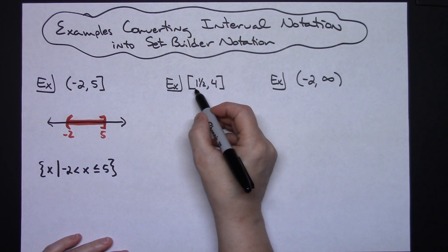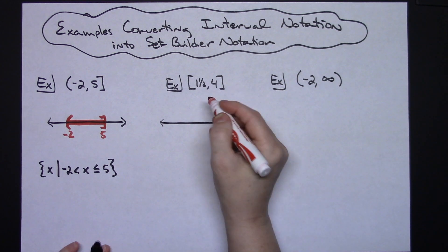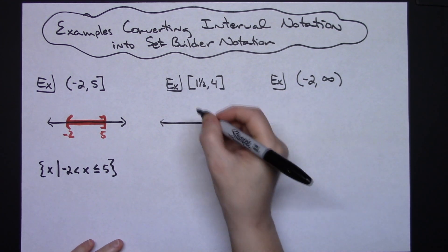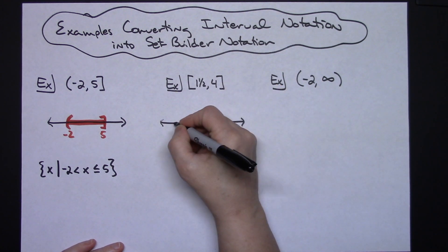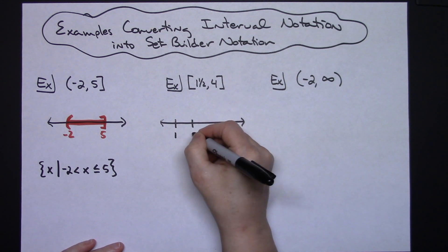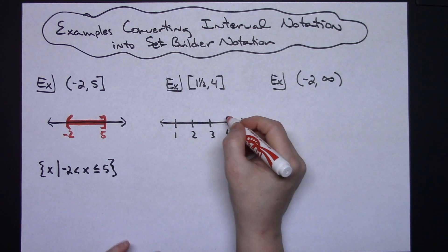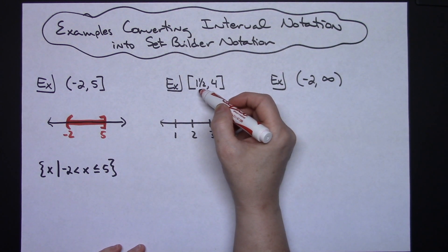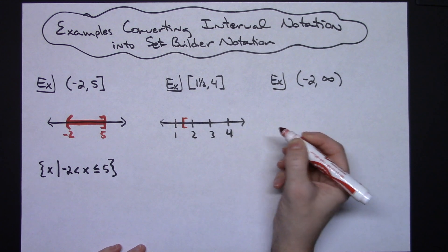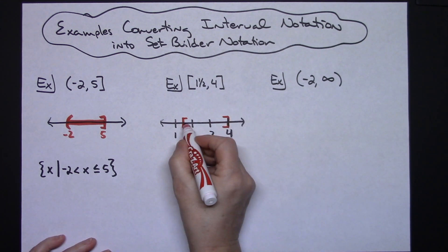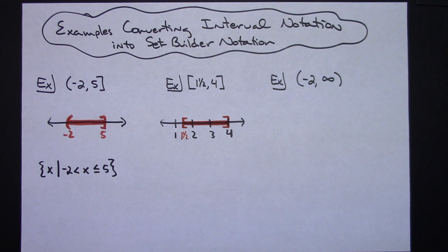On the second example, we have the closed interval from one and a half to four. If I picture this on a number line — note that number lines only show integers as hash marks, so I won't place a hash mark at one and a half. I might mark integers like 1, 2, 3, 4. My interval runs from one and a half to four, with one and a half estimated as halfway between 1 and 2, using a square bracket there all the way to 4, with all values of x in the middle.